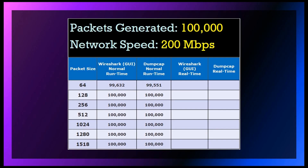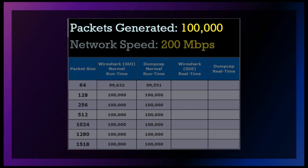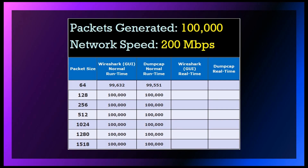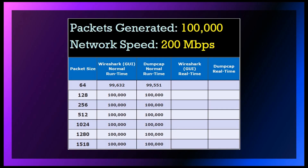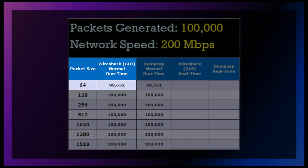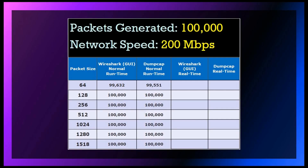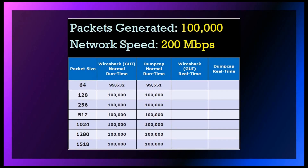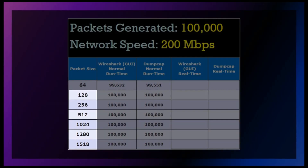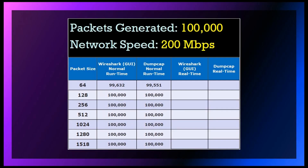We generated 100,000 unicast packets with the network speed increased to 200 megabits per second. For 64-byte packet size, Wireshark GUI was only able to capture 99,632 packets out of 100,000. DumpCap did slightly less at 99,551 out of 100,000. For packet sizes between 128 and 1518 bytes, both Wireshark and DumpCap captured all 100,000 packets.